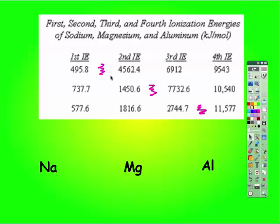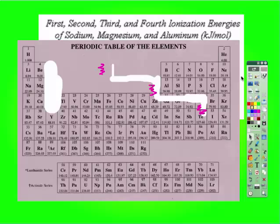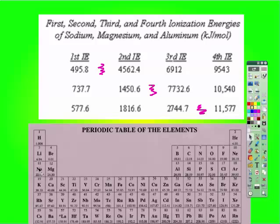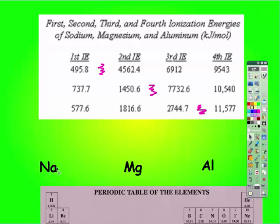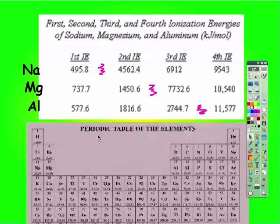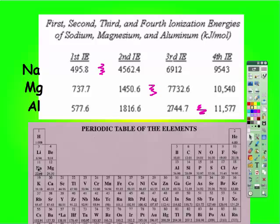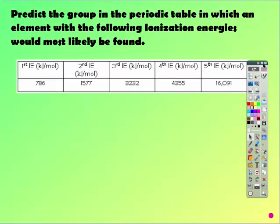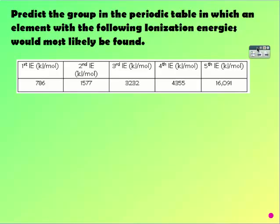When you see the big increase, that means you have now started removing core electrons rather than valence electrons. Sodium loses one valence electron, then you start removing inner electrons — so that must be sodium. The second element must have two valence electrons before hitting core electrons, so that would be magnesium. The third has three valence electrons, because the fourth removal requires much more energy, meaning you're now removing from the core.